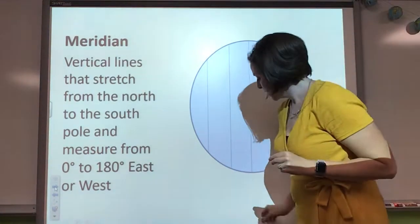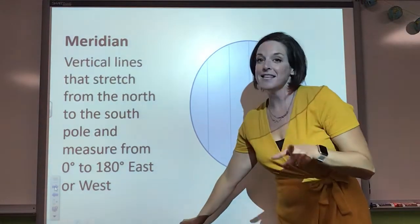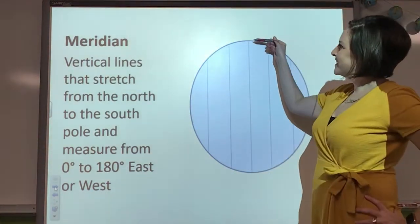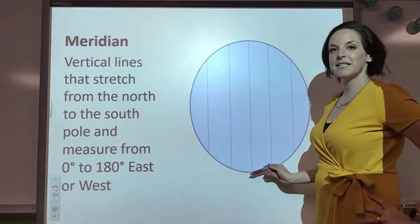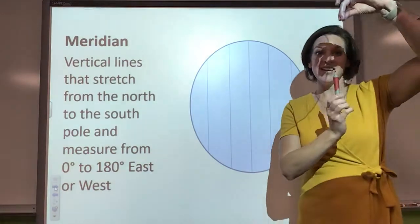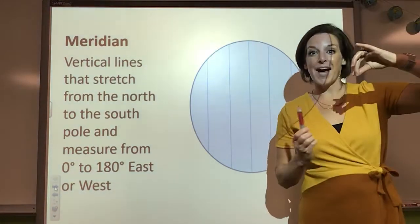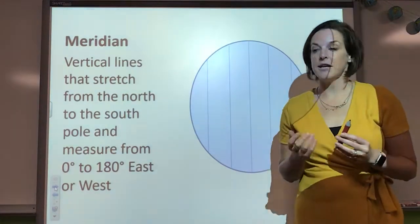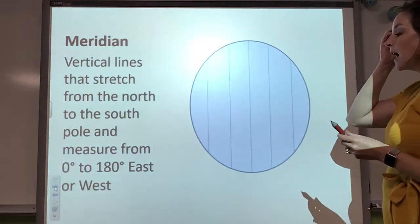So, even though, and this is where it gets so confusing, because you look at these lines and you're like, oh, they go north to south. They do, but they measure east to west. And I think this is the most difficult thing that a lot of students go through.